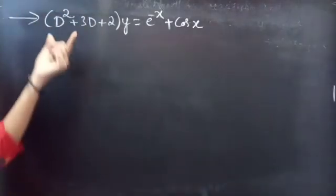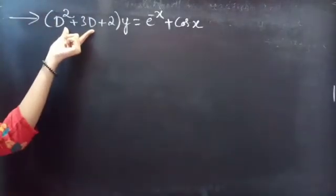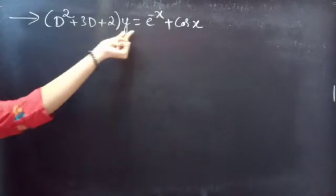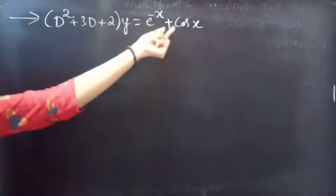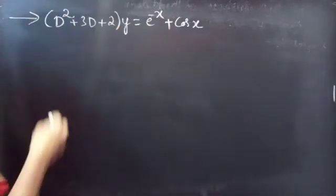Problem. Solve (D² + 3D + 2)y = e^(−x) + cos x. Solution.